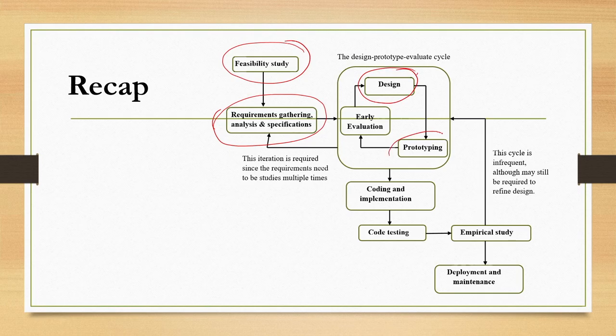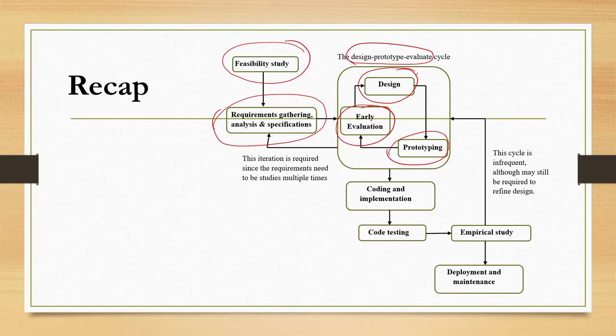Then there is the design, prototype, and evaluation cycle. This cycle is required to take care of primarily usability concerns. The objective is to design usable interfaces and interactions for human computer interfaces. We first come up with a design based on the gathered requirements, then that design needs to be prototyped and evaluated with experts. If usability issues are found, we refine the design, and this cycle continues until we arrive at a stable interface design.